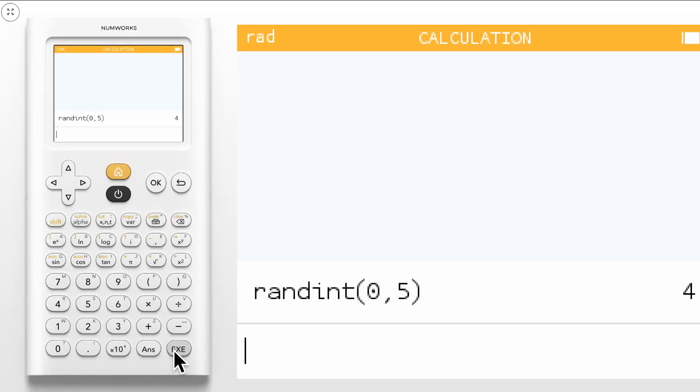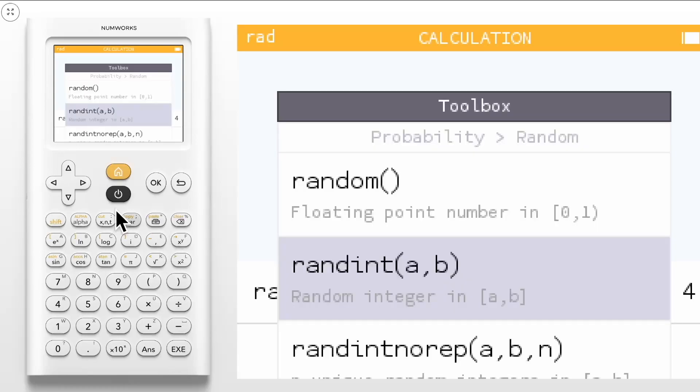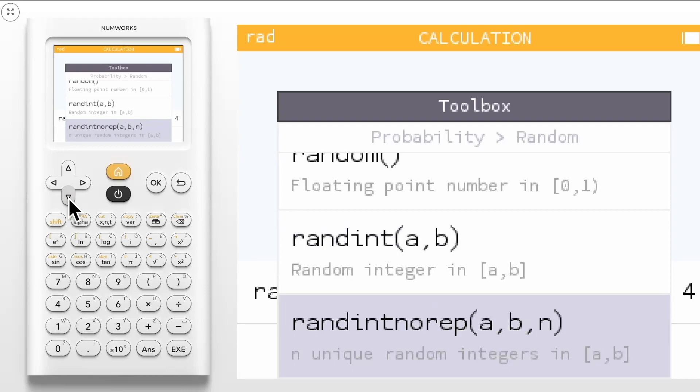Pressing the toolbox key again will bring you back to the menu you were previously on. The last option will give you random integers between two numbers, but there will be no repeats. For example,